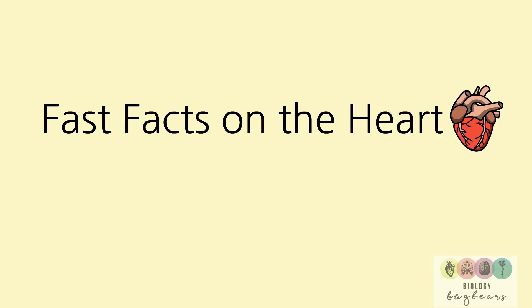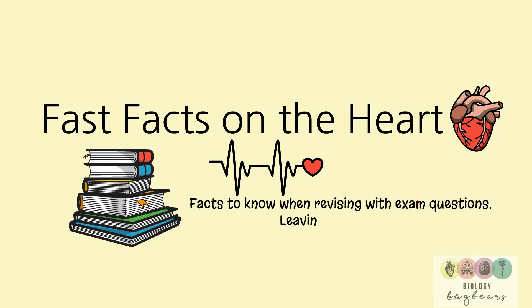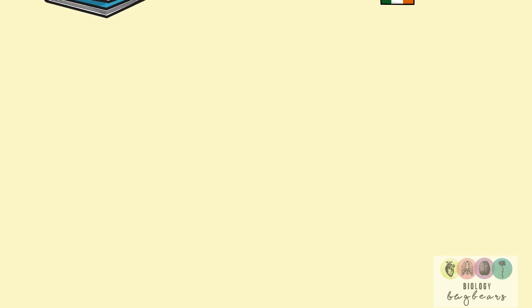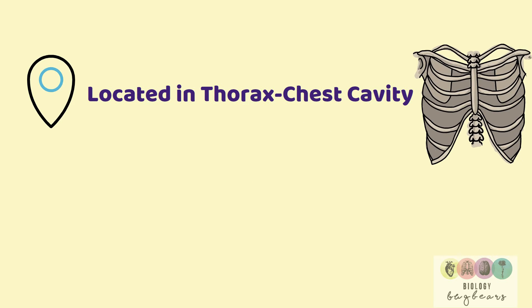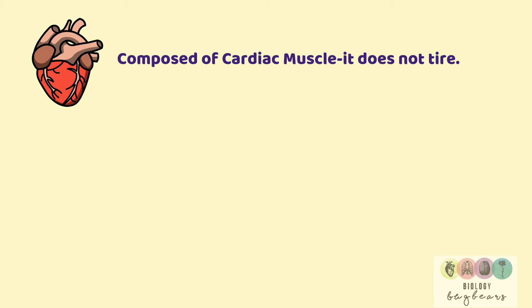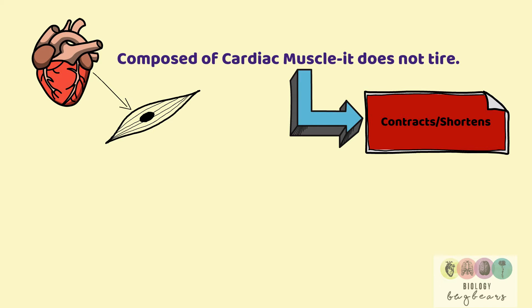Fast facts on the heart. These are a collection of all the details you might find if you're about to do exam paper questions, and sometimes students don't like the heart, so this might make it a little bit easier. Starting with location: the heart is located in the thorax, which is your chest cavity. The heart is mostly composed of cardiac muscle, which is very special because it does not tire or fatigue. Muscle is a type of tissue that can contract or shorten.